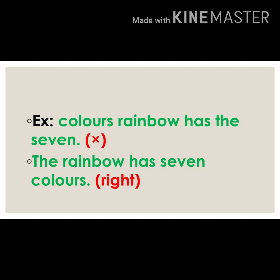Now take some more examples. 'Colors rainbow has the seven.' Is it a sentence? No, it's not a sentence. When we arrange it in proper order then it makes complete sense. So let us arrange: 'The rainbow has seven colors.' Now it makes complete sense, so it is a sentence.